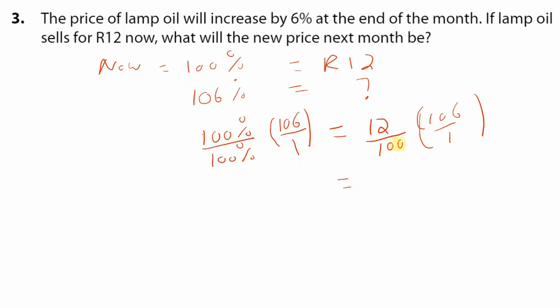So let's see. 100, 2 can go into 100, 50 times. 2 can go into 106, 53 times. 2 can go into 50, 25 times. 2 can go into 12, 6 times. Let's see if there's anything else that can cancel. It doesn't seem so. Let's multiply tops. 6 times 50 is 300. 6 times 3 is 18. So we have 318 at the top. Bottom 25 times 1 is 25.